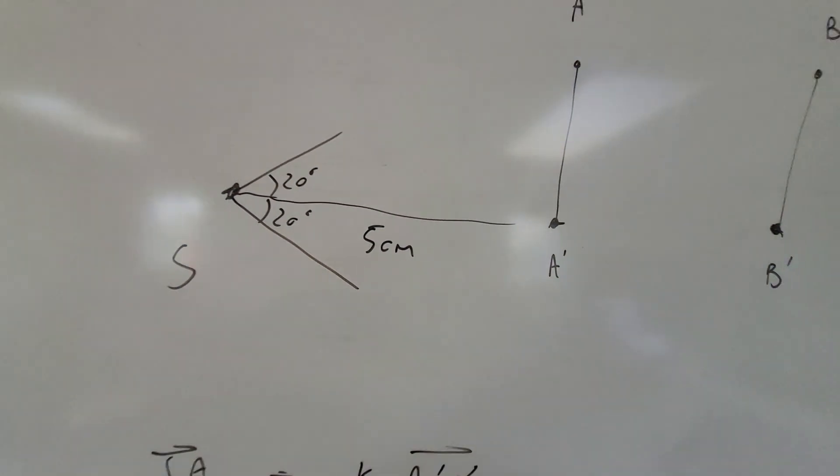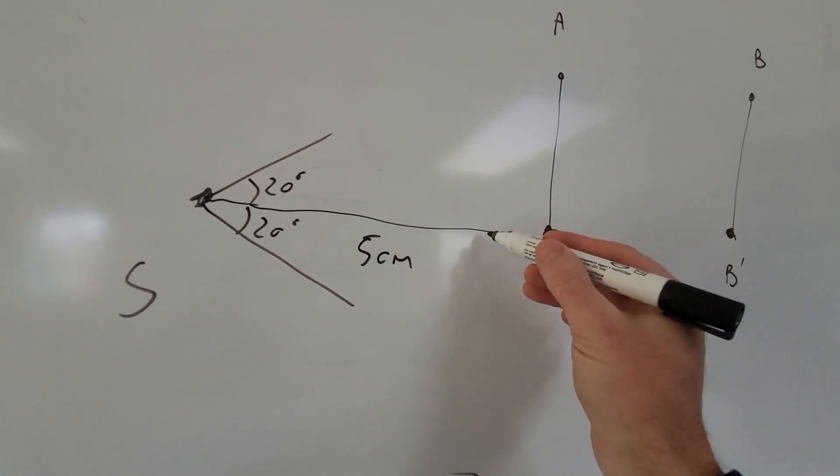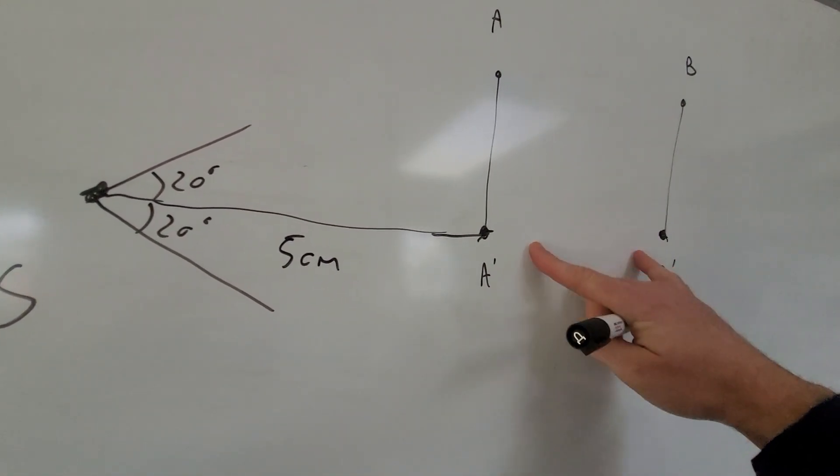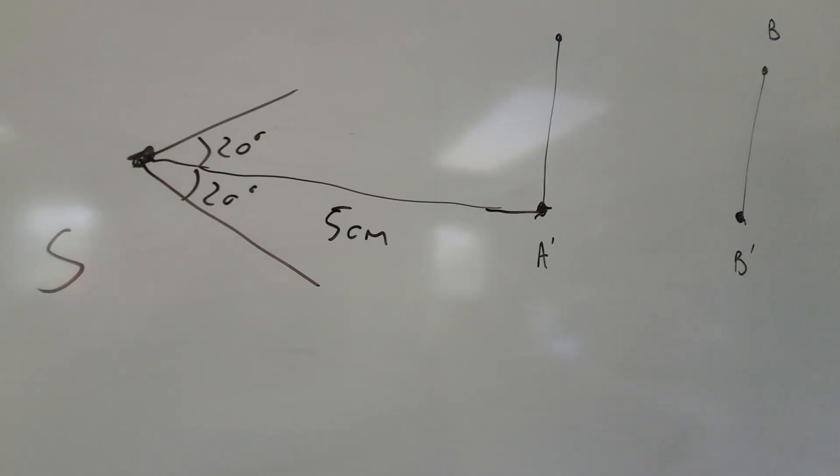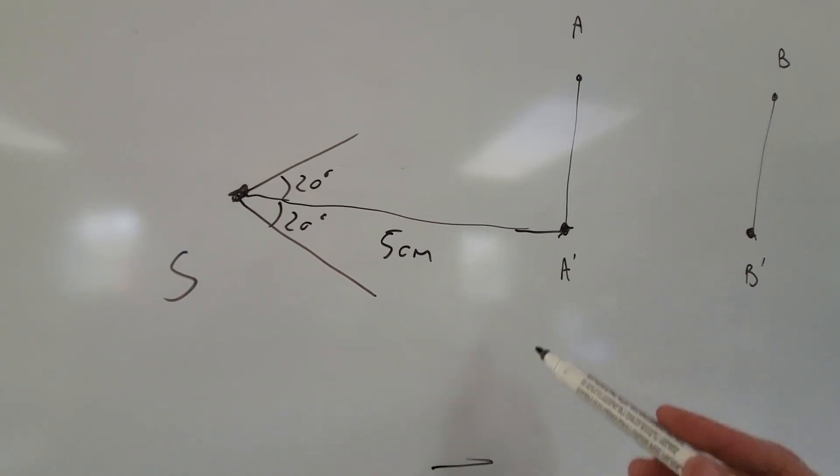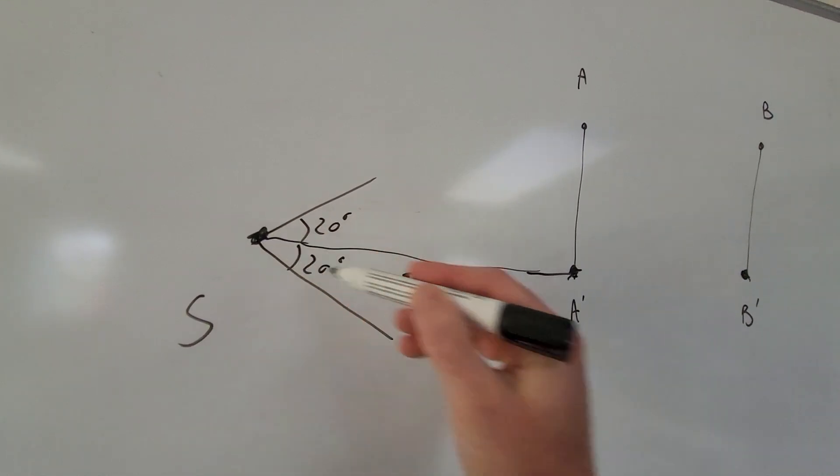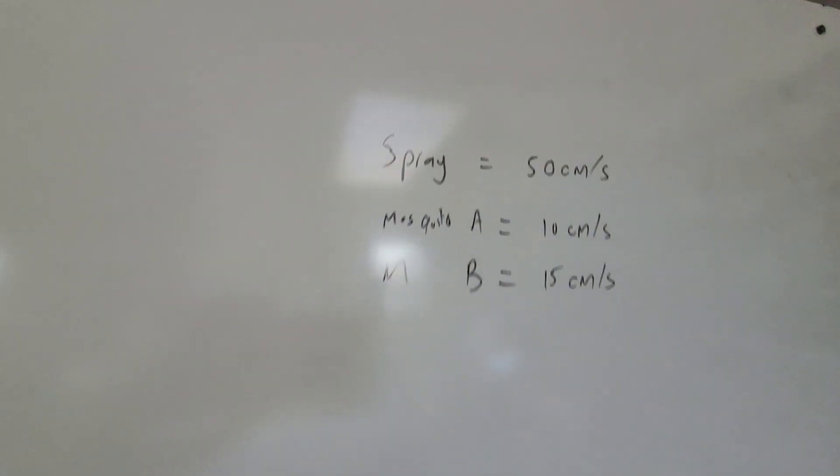So let's go through the limited calculation here. So if I've got 20 degrees and I'm going to spray it when mosquito A and B are closest together, so they're in these positions. Well, it's going to take one tenth of a second. OK, it's going to take 0.1 seconds for the spray to get from S to the position A prime. And that's because the spray travels at 50 centimeters a second.